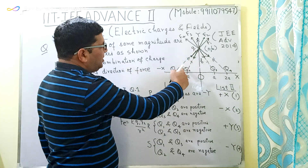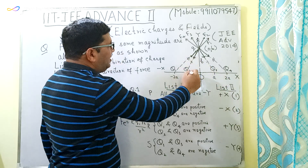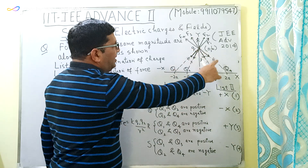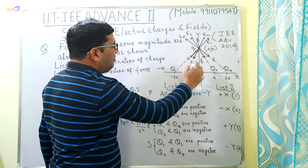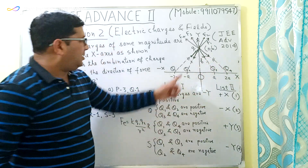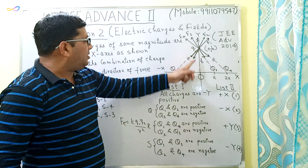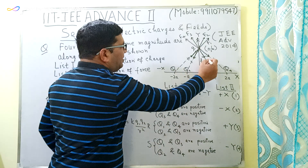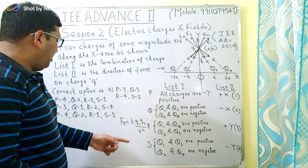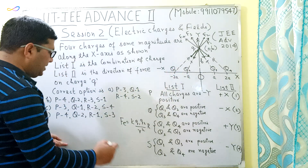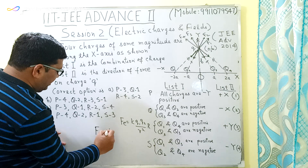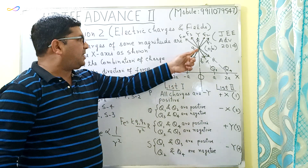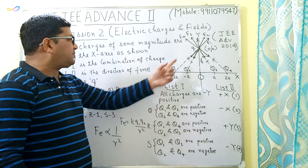Since the horizontal distances are equal and B is the common height, the distance between charge Q and Q1 equals the distance between Q and Q4. Similarly, the distance between Q and Q2 equals the distance between Q and Q3. The magnitude of the electrostatic force is directly proportional to 1/R²: if the distance reduces, the force increases, and if the distance increases, the force decreases.